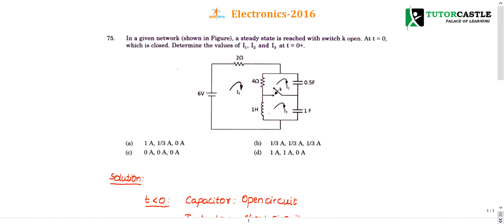Question number 75 is on transients. In the given network shown in the figure, a steady state is reached when switch K is open. At t equal to 0, the switch is closed. Determine the values of I1, I2, and I3 at t equal to 0 plus.